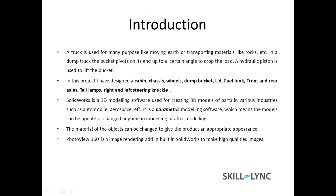SOLIDWORKS is a 3D modeling software used for modeling 3D parts in industries like automobile and aerospace, and it is parametric modeling software. This means I can update my models at any time — if I want to make some changes to the model, that's what parametric means. The material of objects can be changed to give an appropriate appearance. PhotoView 360 is the image rendering software built into SOLIDWORKS to make high quality images.